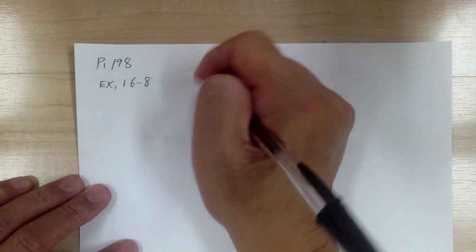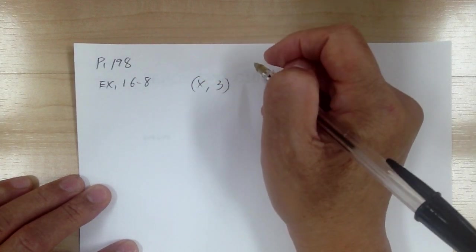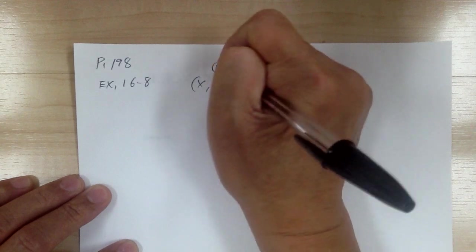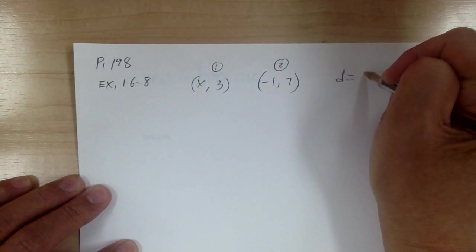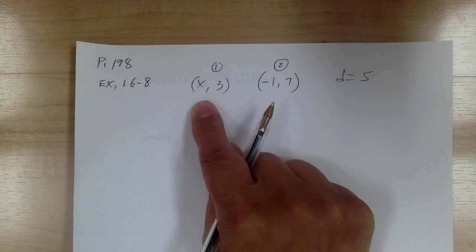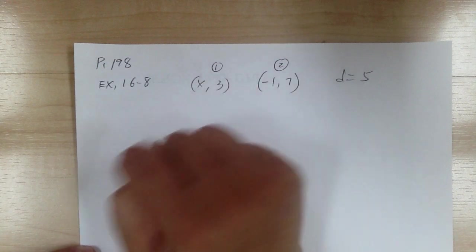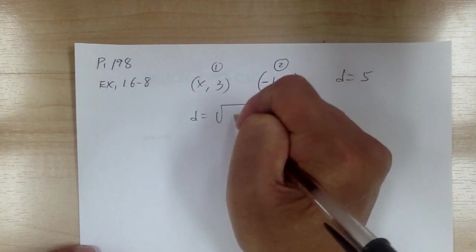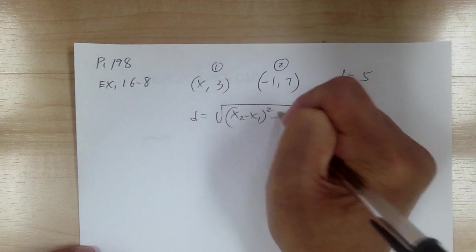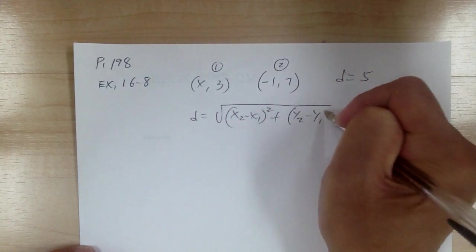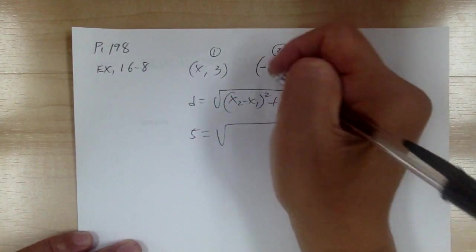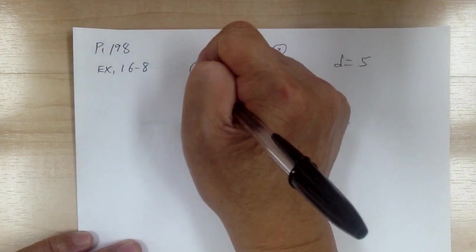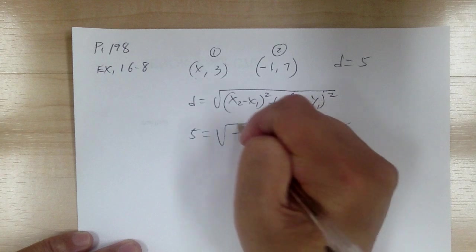Find all x such that the point (x, 3) is five units away from (-1, 7). So point one is (-1, 7) and point two is (x, 3), and the distance between them equals five. Using the distance formula: 5 = √((−1 − x)² + (7 − 3)²).